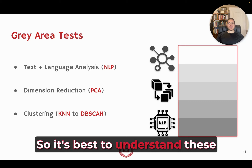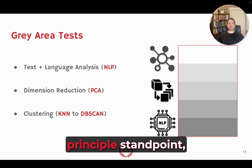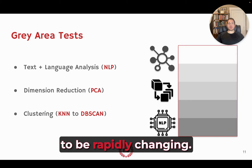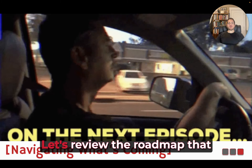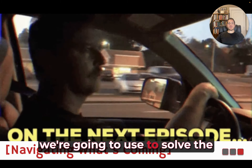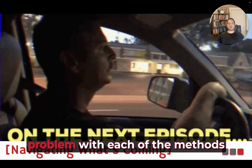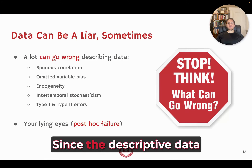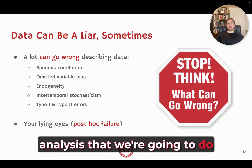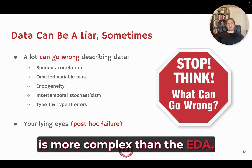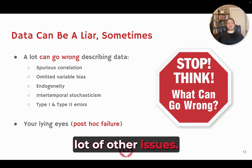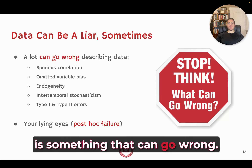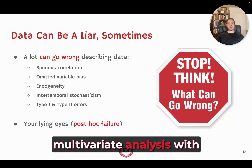It's best to understand gray area tests from a first-principles standpoint because the specific names and types of tests are going to be rapidly changing. Let's review the roadmap to solve the descriptive data analysis problem with each of the methods we've connected it to. Since DDA is more complex than EDA, it opens the door for many other issues — each of these listed is something that can go wrong with multivariate analysis.